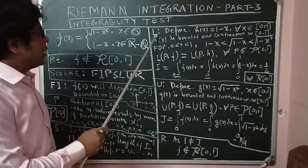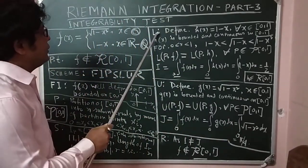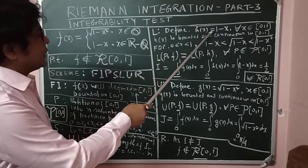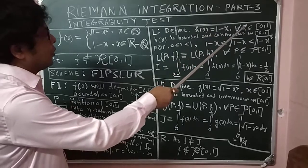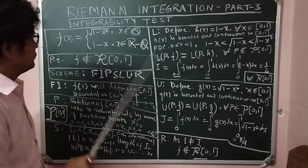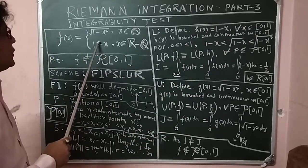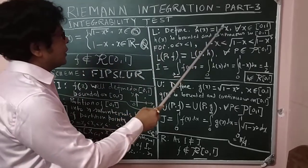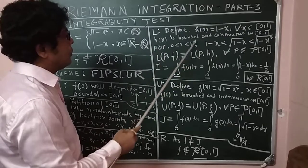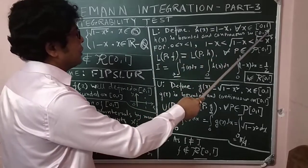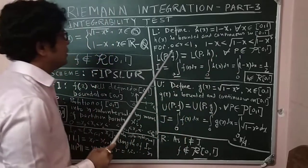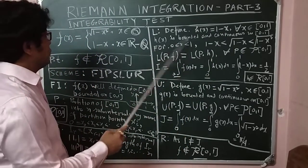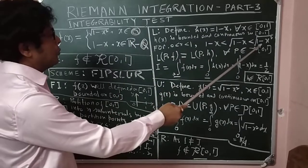Now L part. To find the lower part, I define a function h(x) = 1-x for all x ∈ [0,1]. We see that this is a polynomial function and h(x) is bounded and continuous in the closed interval [0,1].